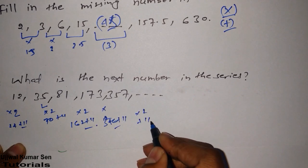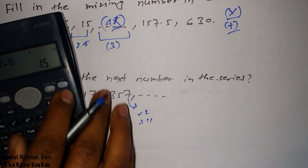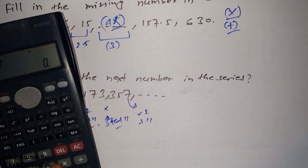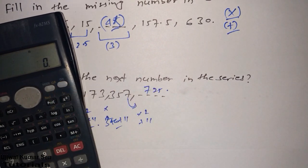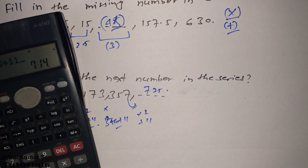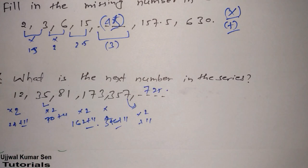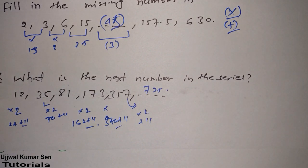We are sitting in the GATE examination, so we don't need to take tension about calculator. Here how much am I getting? I am getting 725. I can do it again: 357 multiple 2 plus 11, so 725. This is the way to solve questions related to number series.